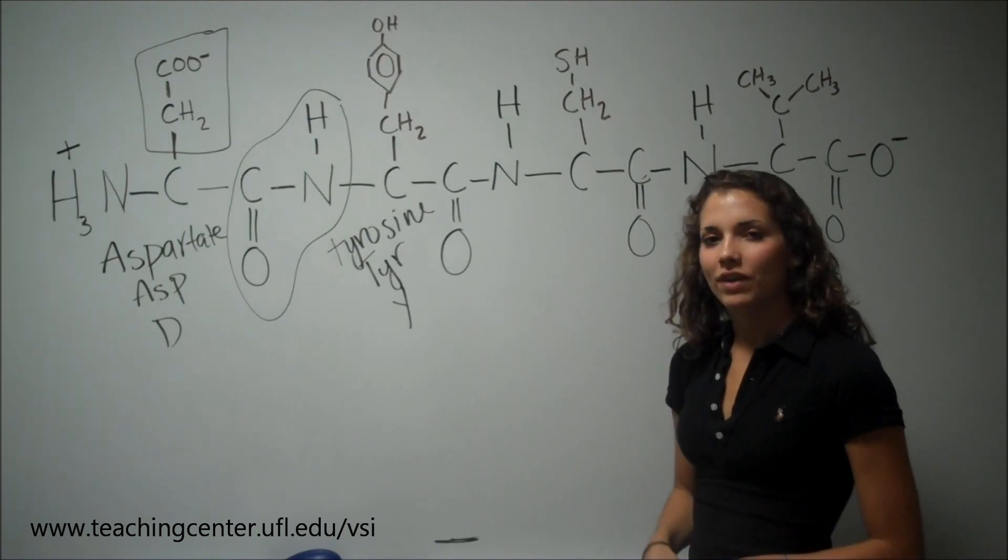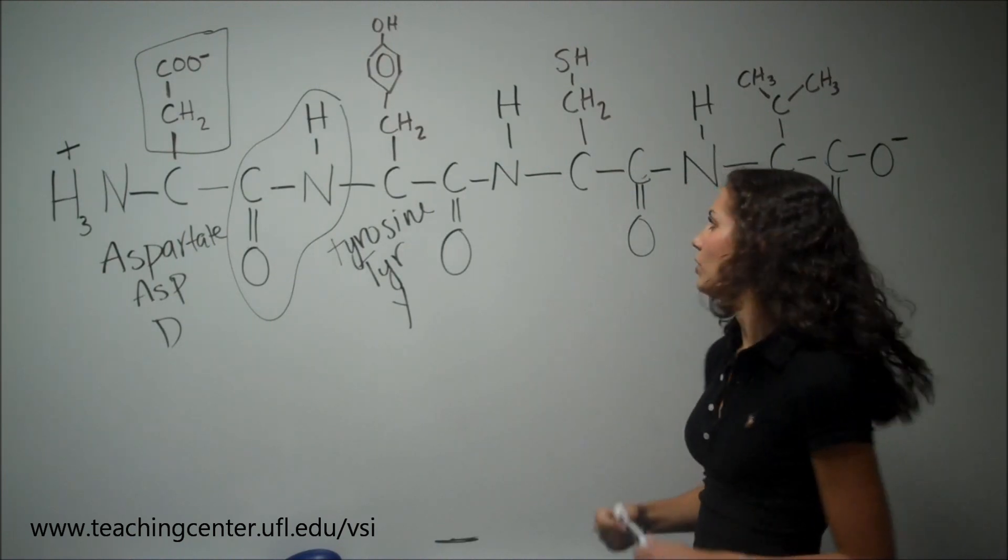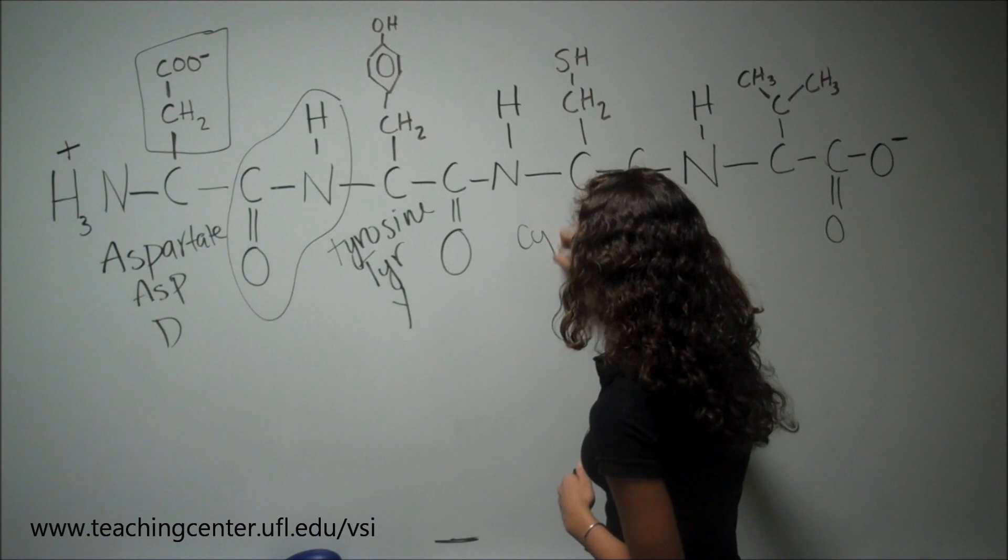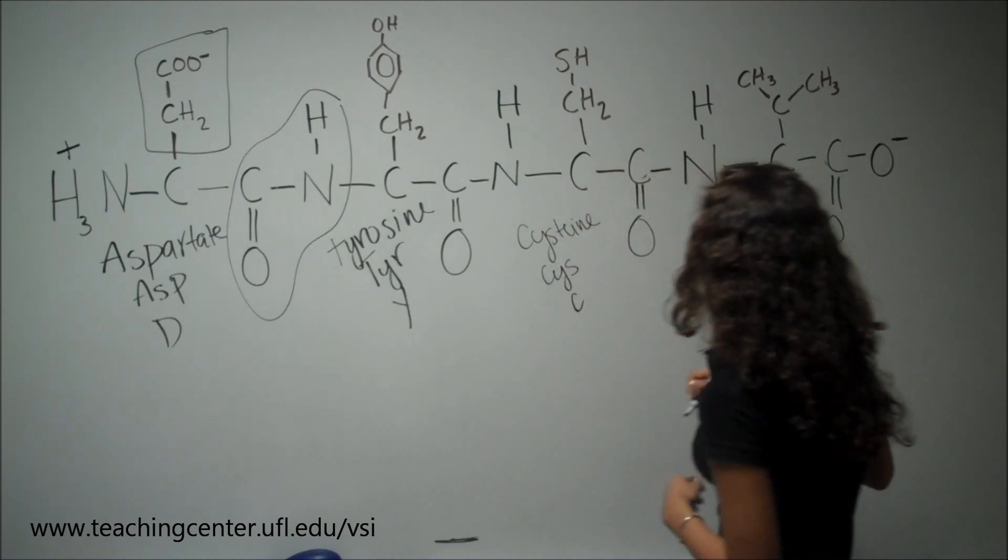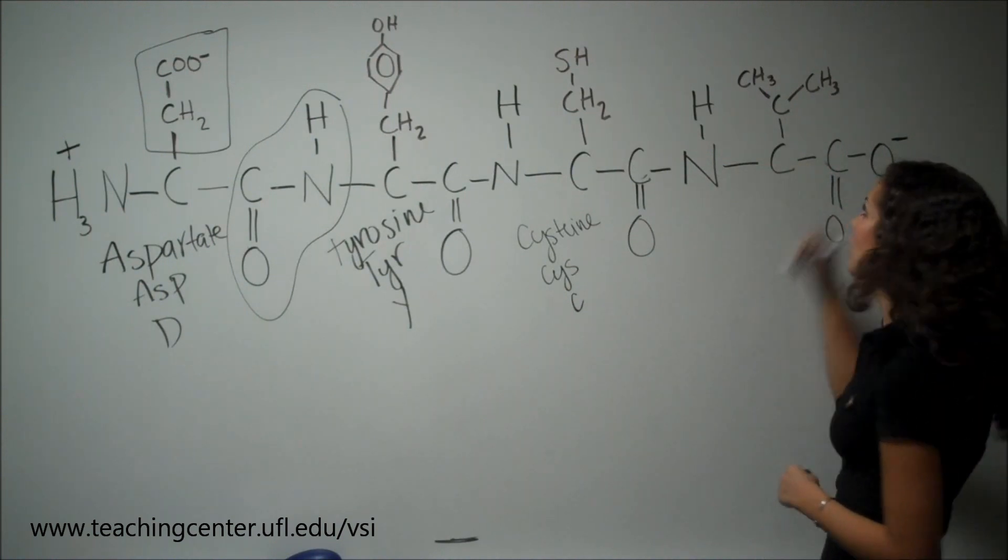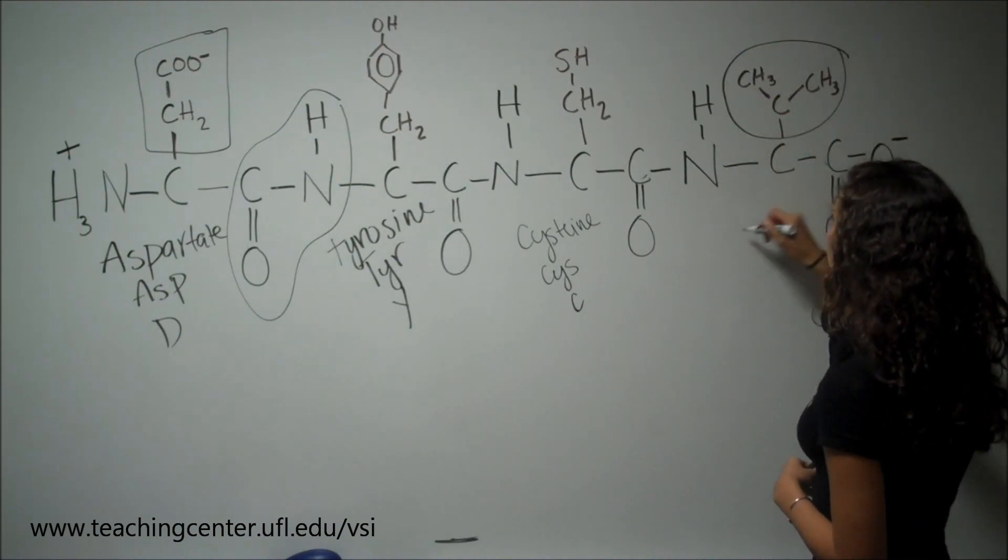It's cysteine, and it's going to be very important in tertiary structure of proteins. And this last amino acid here is valine.